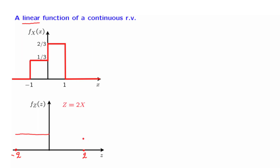By a similar argument, the PDF of z should also be constant over the range from 0 to 2, and the PDF must of course be 0 outside this range because these are values of z that are impossible. The probability that x is positive is the area of this rectangle, and that area is 2 thirds, so the area of the corresponding rectangle for z should also be 2 thirds, meaning the height of that rectangle should be equal to 1 third. Similarly, the probability that x is negative is the area of this rectangle, equal to 1 third. When x is negative, z is also negative, so the probability of negative values should equal 1 third, and for the area of that rectangle to be 1 third, the height should be 1 sixth.